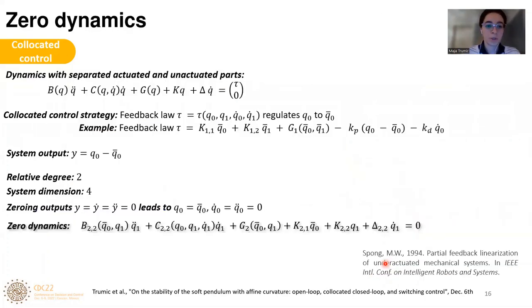Let us now talk about the closed-loop control. Here, we will examine the collocated control, starting from our well-known dynamics that is separated into actuated and unactuated part. The aim of our control is to regulate the tip orientation to some q0 bar. To achieve that, we will use some feedback load tau that is provided here. We will assume that the system output is equal to q0 minus q0 bar. By finding higher derivatives of y, we can conclude that the relative degree of the system is equal to 2, and the system dimension is equal to 4. That means clearly we have one underactuated system.